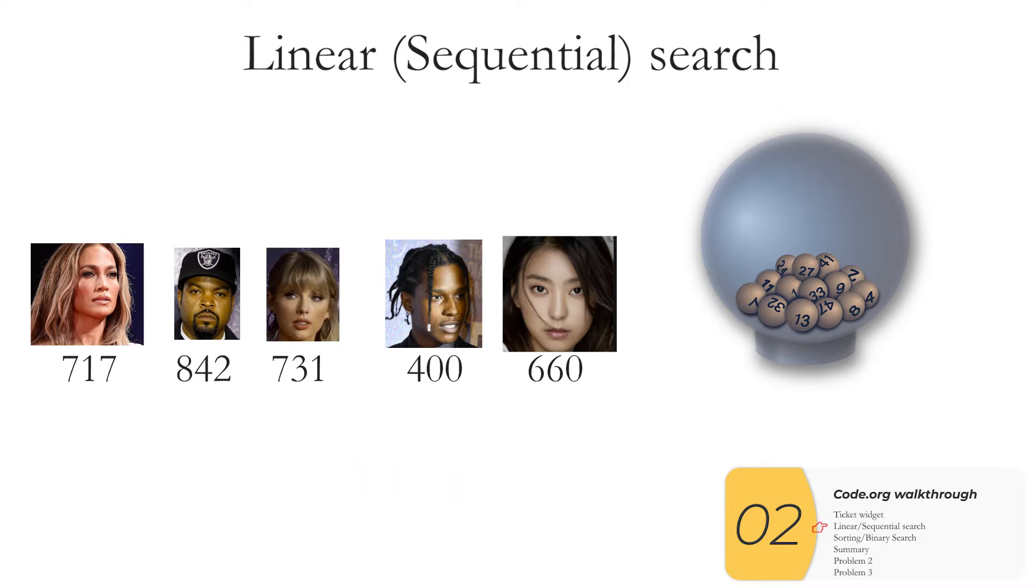But it's not always going to be quite this fast. I could have drawn the number 660 instead and now searching for the winner starting from left to right it takes me five steps which is longer than one step. This searching process when I search for items one by one just like this is called a linear search. Sometimes you'll hear sequential search but you'll want to know this term for the exam: linear search.